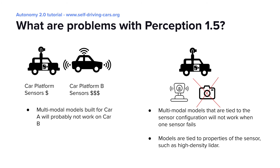What are the challenges with these multimodal methods? One problem is that they're not generic — they typically rely on a fixed set of sensor inputs and don't allow scalable development when sensors are updated or replaced with cheaper hardware. They'll also likely stop working if one sensor input fails; for example, a camera-LiDAR model trained together will typically not work when either sensor is missing. Models are also heavily tied to the physical properties of the sensors — the majority of LiDAR models today have an implicit assumption on high-density LiDAR. What if we want to deploy models on sparse LiDARs?